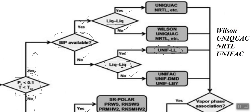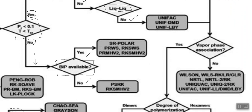In total, four property packages emerge from this side of the diagram: when binary interaction parameters are available — UNIQUAC, NRTL — with or without liquid-liquid, and Wilson added for the non-liquid-liquid case. When binary interaction parameters are not available, we use UNIFAC or its extension. So basically we will be dealing with four key property packages: Wilson, UNIQUAC, NRTL, and UNIFAC.